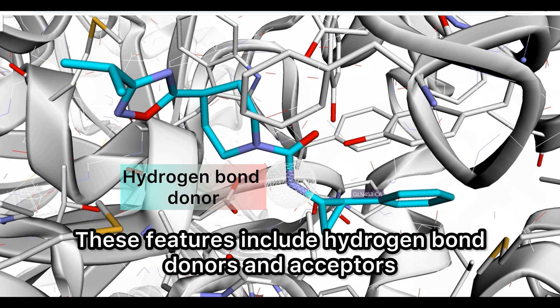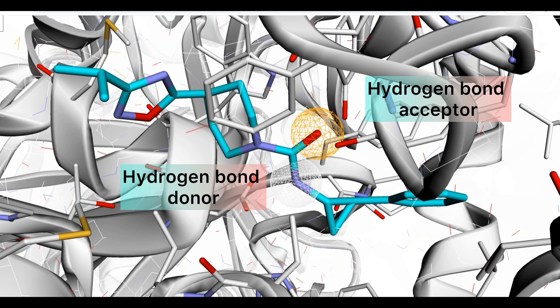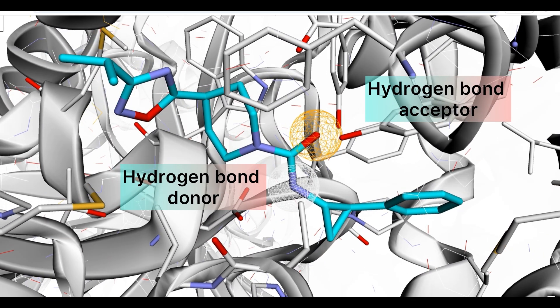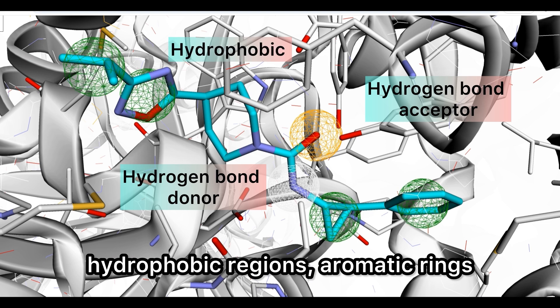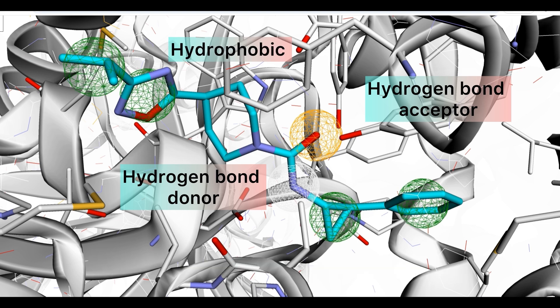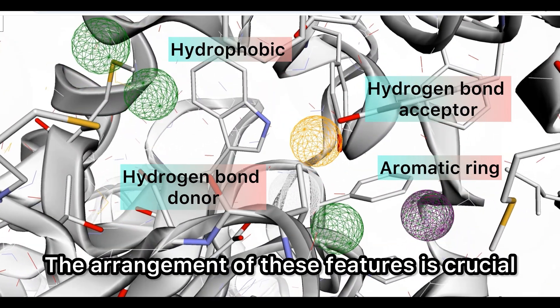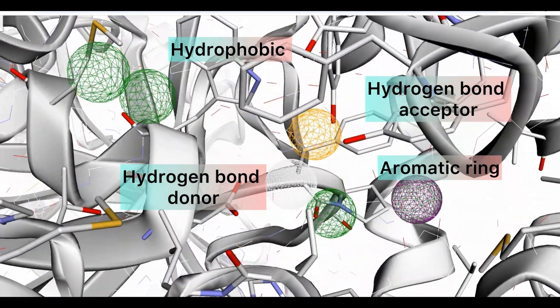These features include hydrogen bond donors and acceptors, hydrophobic regions, aromatic rings, and charge interactions. The arrangement of these features is crucial for the molecule's activity.